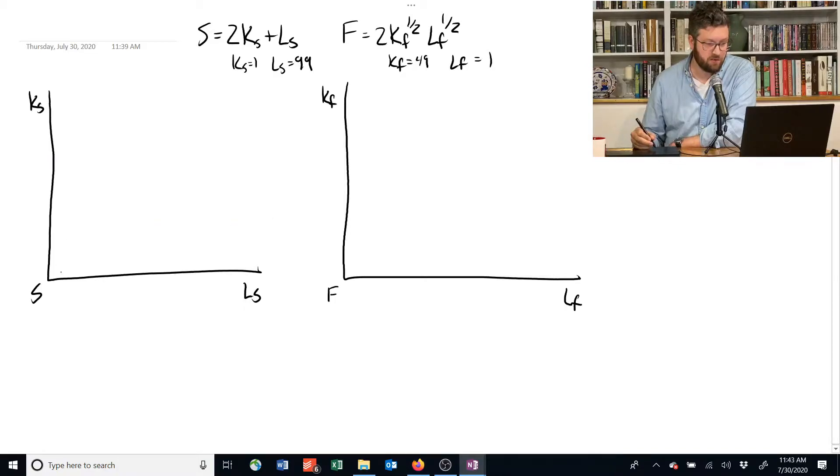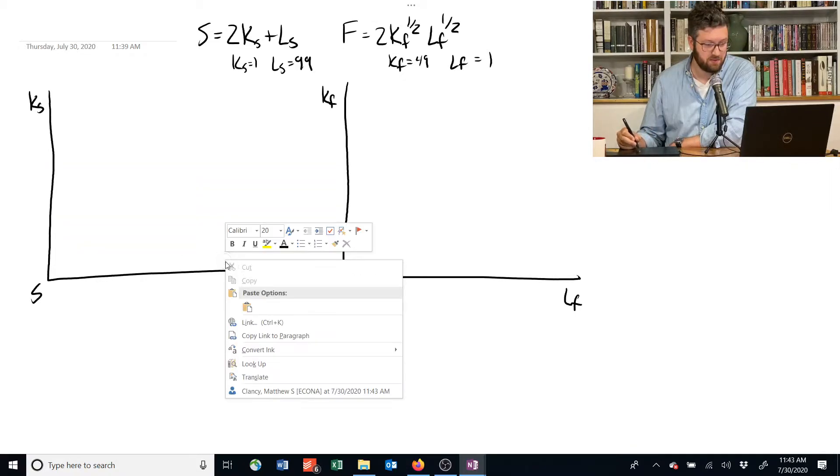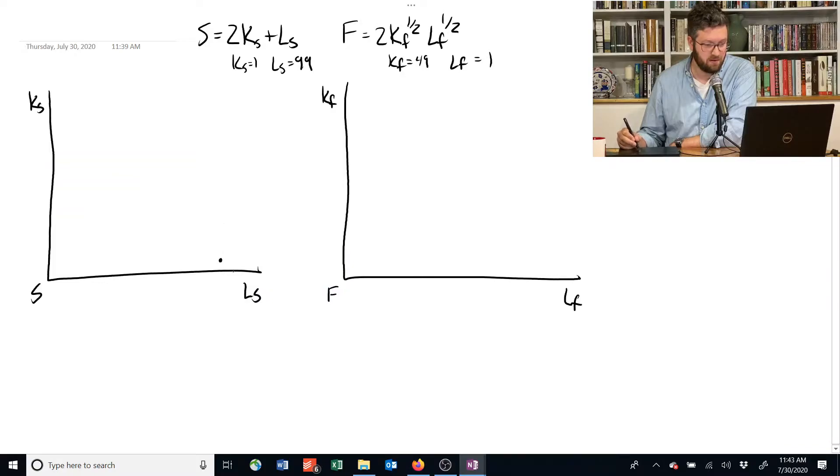We can draw those points on this graph here. KS is equal to 1, so it's going to be something like here and LS is equal to 99. We'll say it's right there. And this is 100, for example, and this will be 50.